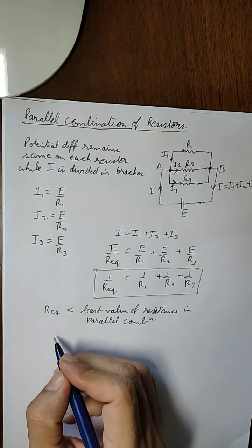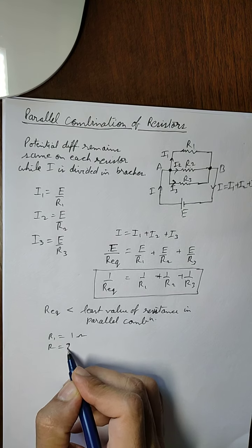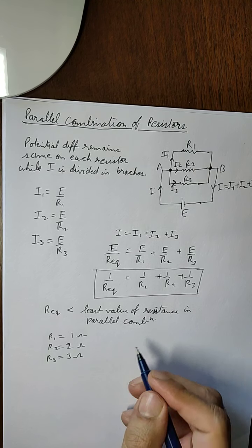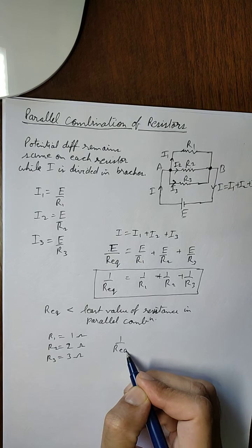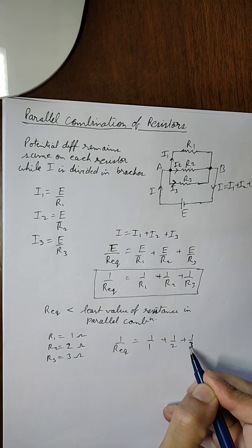What I mean by that is suppose that R1 equals 1 ohm, R2 equals 2 ohms, and R3 equals 3 ohms, then 1 upon R equivalent will be equal to 1 by 1 plus 1 by 2 plus 1 by 3.